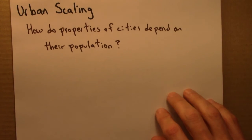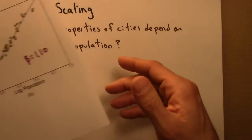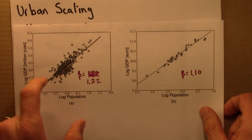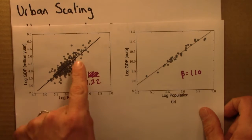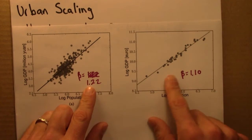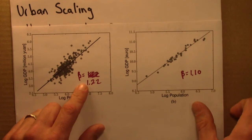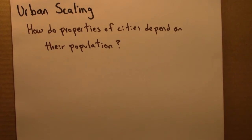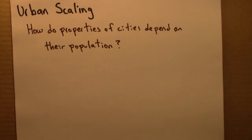One can look at a lot of different properties of cities, for different data sets, and make a plot, observe a trend on a log plot, and estimate a beta. If one does that for different data sets and different quantities, some interesting trends or patterns emerge.